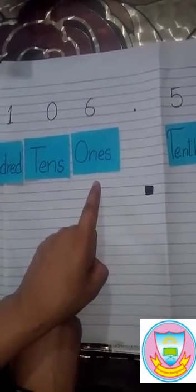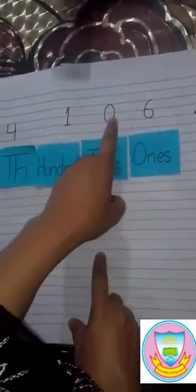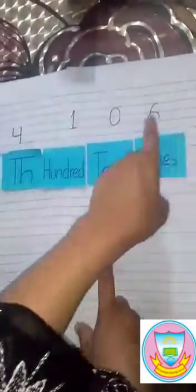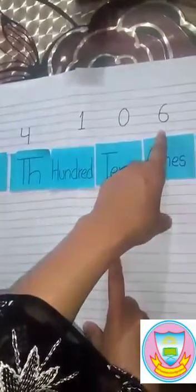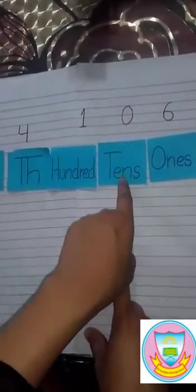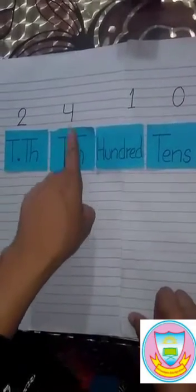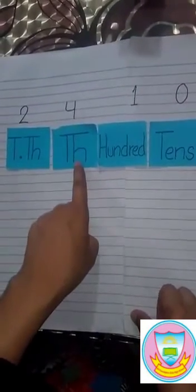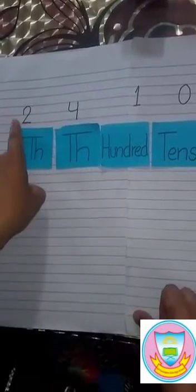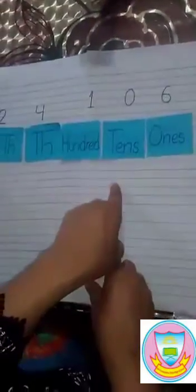Students, first we learn the place values. First we learn the values before the decimal. The first value before the decimal is in ones. The second value is in tens. The third value is in hundreds. The fourth value is in thousands. And the fifth value is in ten-thousands.